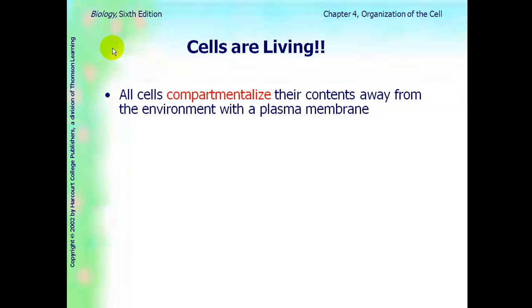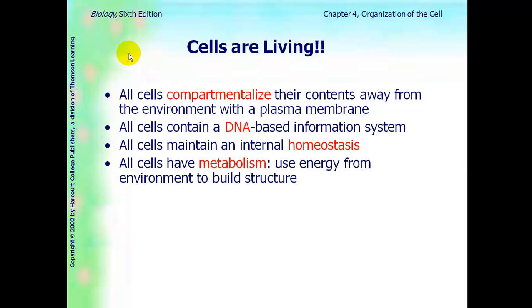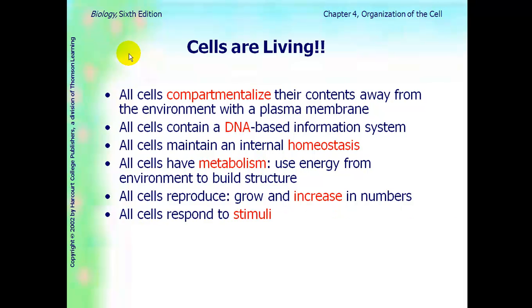Cells are a living thing. All cells have compartments, and they can separate contents away from their environment. All cells contain a DNA-based information system. All cells can do homeostasis. All cells have metabolism. All cells can reproduce, which is a growth and increase in numbers. All cells respond to stimuli. All cells can move. And all cells can evolve and adapt. If you remember from Chapter 1, these are properties of life, and all cells exhibit these properties.